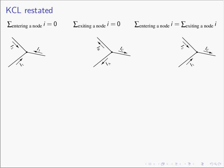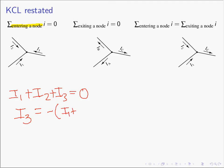Looking at Kirchhoff's Current Law in a different way: KCL states the sum of the currents entering a node must equal zero. So i1 plus i2 plus i3 equals zero, which implies i3 equals negative of i1 plus i2. That is the exact version we just worked.